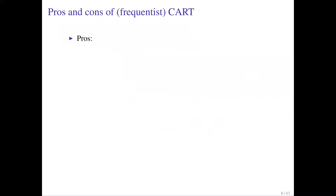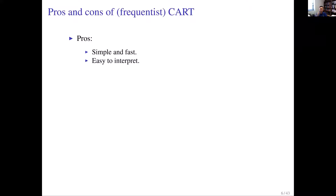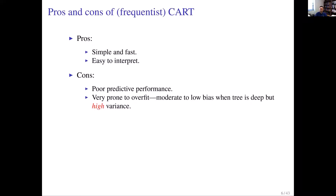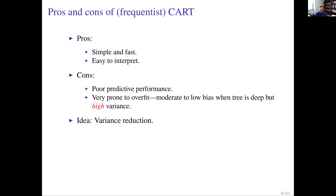There are pros and cons for both frequentist and Bayesian CART. The frequentist version is simple, fast, and easy to interpret — doctors love it, being able to associate health outcomes with different patient categories in different partition blocks. However, the predictive performance is generally poor, and it's very prone to overfitting. Although bias isn't huge, these models have high variance, and out-of-sample predictive performance is generally not great.